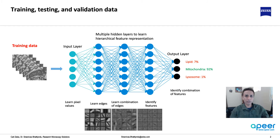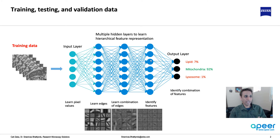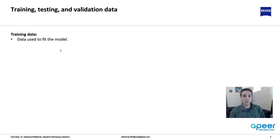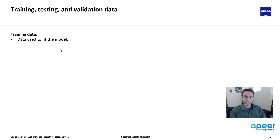Going back to this network — how are we training it? We have a neural network; it could have convolutional layers. I'm just showing the dense layers here, but you have this network and a whole bunch of data going in and training it. Every piece of data that goes through this network where the weights are adjusted is your training data. Training data is used to fit the model — that's it. We are adjusting the weights and biases, and by definition this is supervised machine learning.